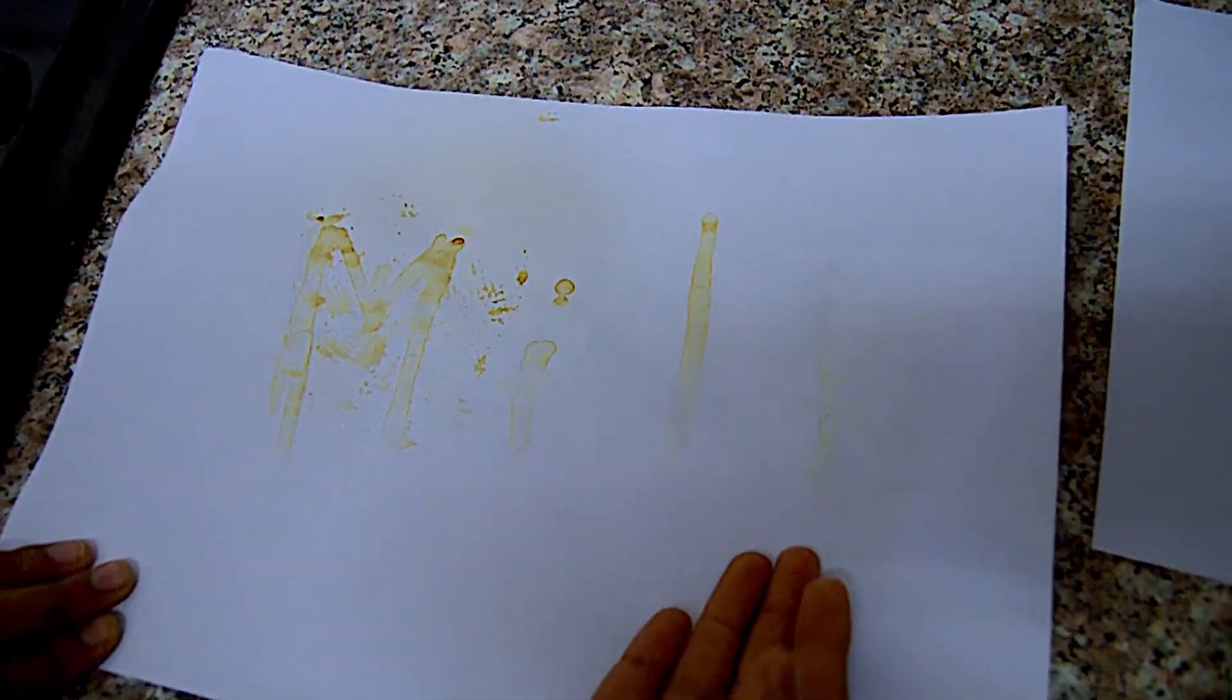There you guys go, the message has been revealed. Milk, I know a little bit of milk is spilled on the paper, this part here, but I still got it done and you can still see your message. So you guys can write whatever you want and it should work. Now let's go for the lemon one.